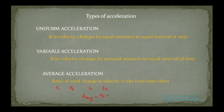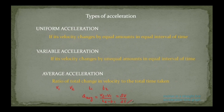Average acceleration a_avg equals (v2 minus v1) divided by (t2 minus t1), which can be written as delta v divided by delta t. This is the formula for average acceleration.